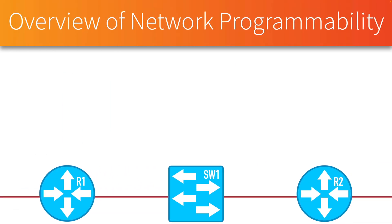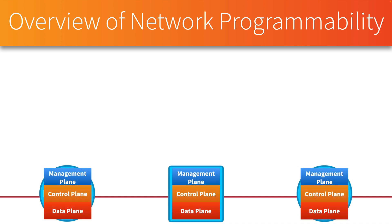By network programmability, I mean that we can configure the devices on our network with programs rather than going to them directly. Traditionally, routers and switches have three different planes of operation. We have the data plane, concerned with getting bits in one interface and sending them out the appropriate egress interface as quickly as possible. At the control plane, any sort of algorithm would run — for example, the Dijkstra algorithm used by OSPF, or spanning tree protocol on a switch. And the management plane is how we as network administrators connect to the device for administrative purposes.